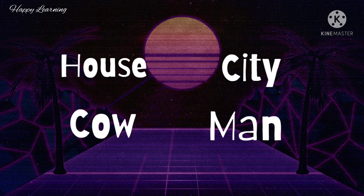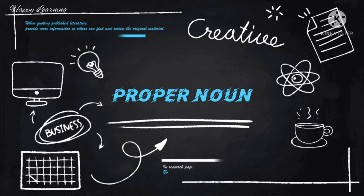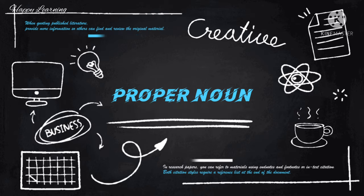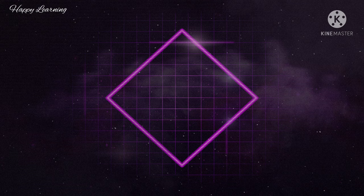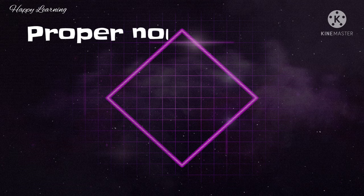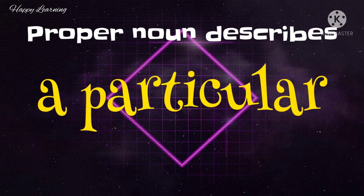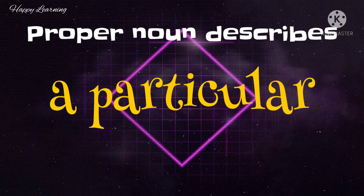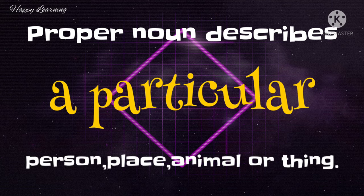Second comes the proper noun. A proper noun describes a particular person, place, animal, or thing — that is, it refers to something specific.